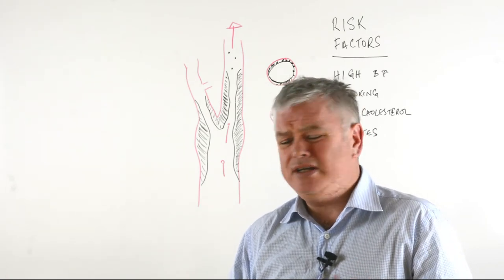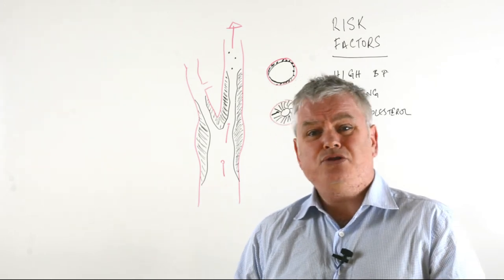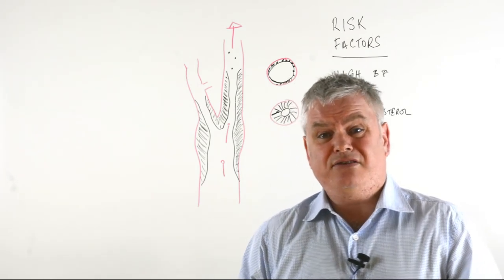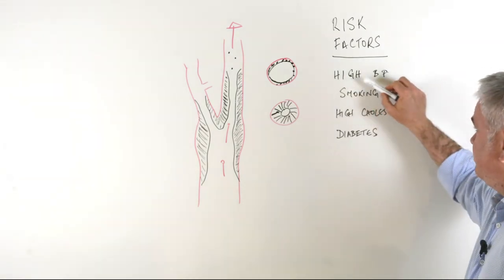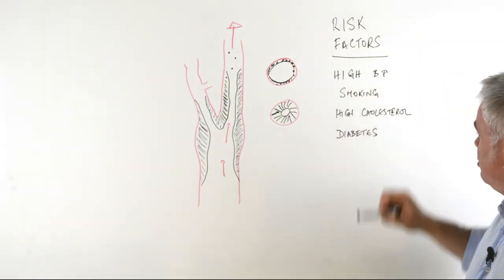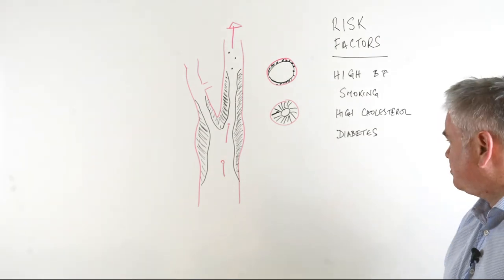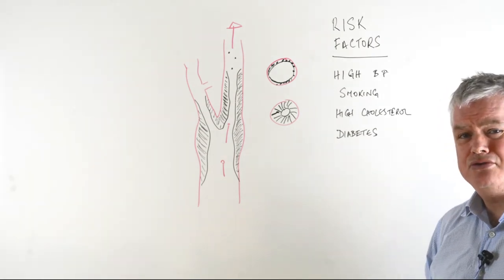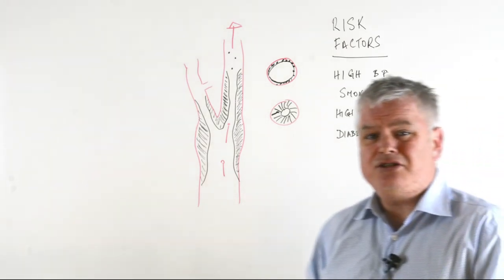So how do you treat a badly diseased carotid artery like that? Well the most important thing to do is to deal with the risk factors and try and get them sorted first of all. So if you've got high blood pressure or high cholesterol, get them under control, and if you're diabetic try and get the best possible diabetic control, and of course stop smoking.